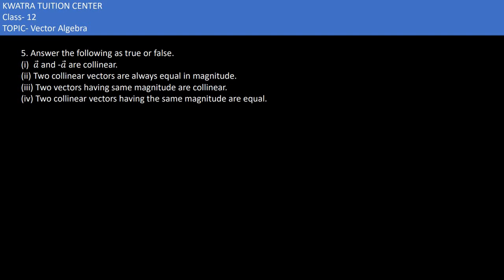Here in the 5th part we have to answer the following as true or false. If A and minus A is collinear, collinear can be, let's say this is the A vector and minus A is in the opposite direction.